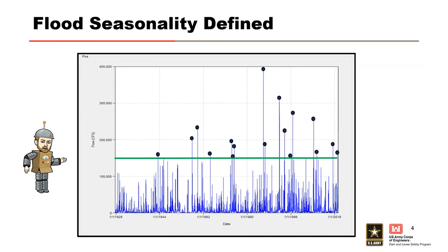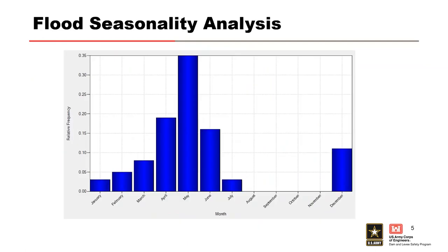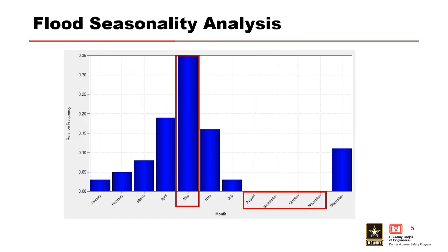We're not looking at annual maximums anymore — we're looking at all floods that are larger than some threshold we've determined. We then plot them based on a relative frequency process. This histogram is a result of flood seasonality analysis, showing the months or periods of the year during which floods have occurred based on the discharge gauge data. The relative frequency is calculated for each month. In this example, floods occur most often in May and have not occurred at all in August through November.